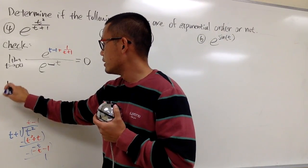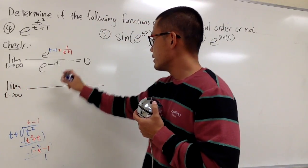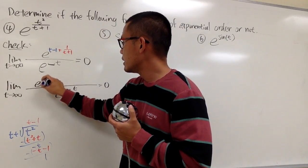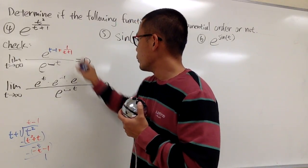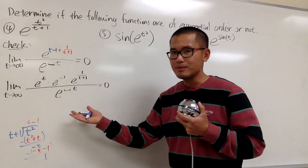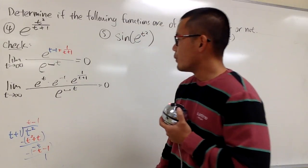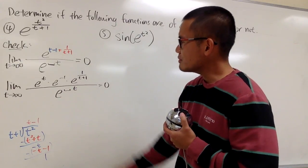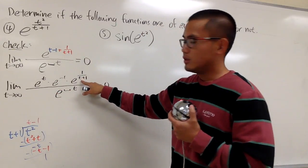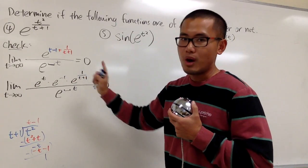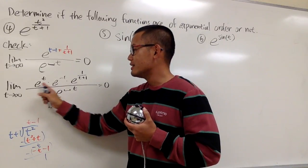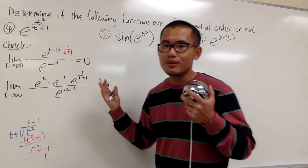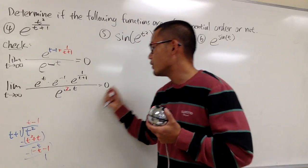This is the same as the limit as t goes to infinity of all that over e to the something t — I want to make it equal to 0. We have e to the t times e to the negative 1 times e to the 1 over t plus 1. As t goes to infinity, e to the 1 over (t+1) goes to e to the 0 which is 1, and e to the negative 1 is just 1/e — a constant. So I can just choose alpha to be 2, and e to the t over e to the 2t leaves e to the t on the bottom.